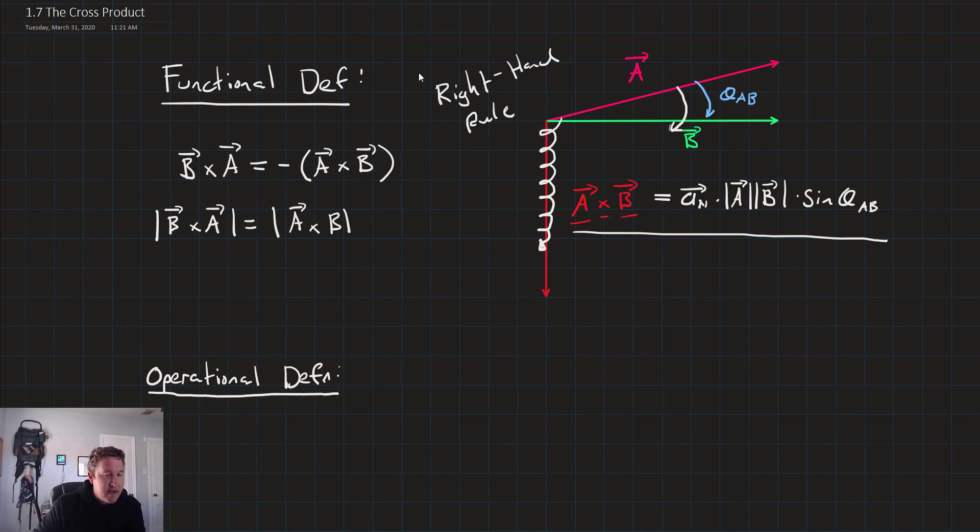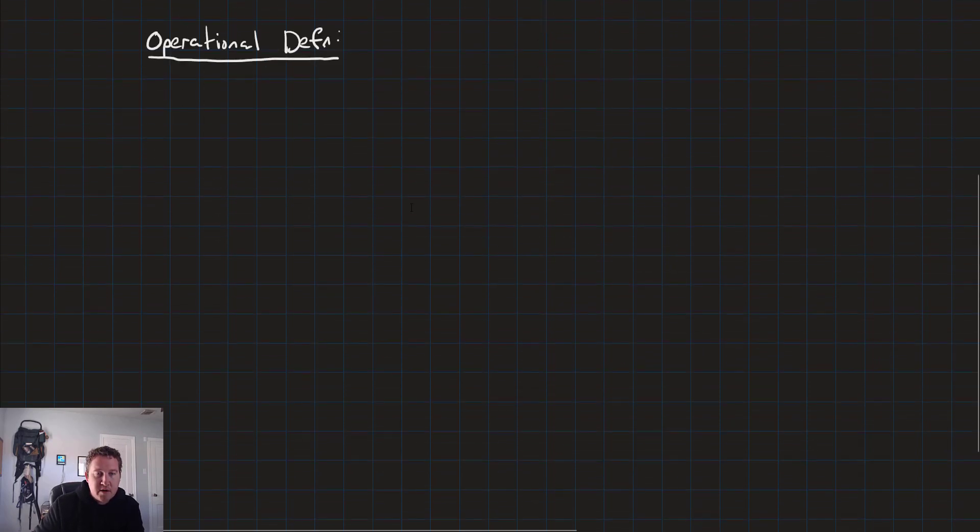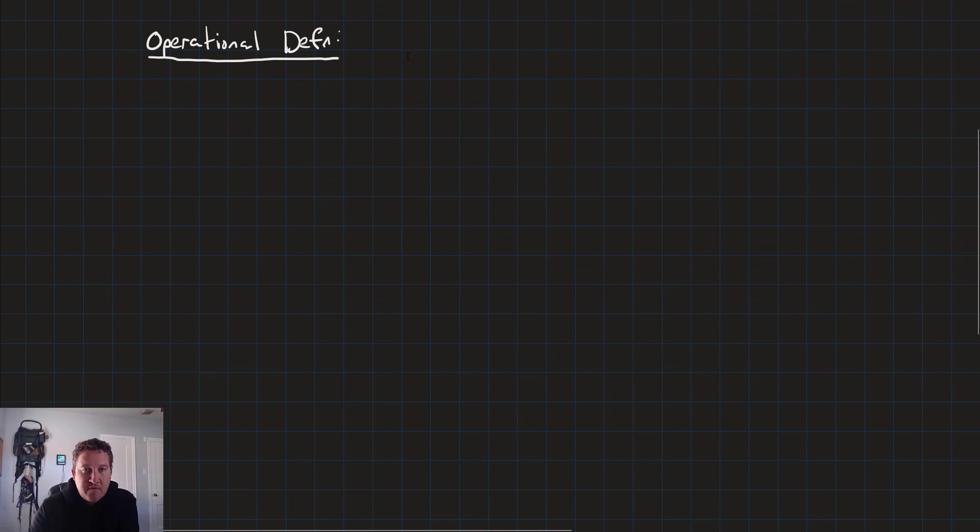Well how can we actually work it out by hand to figure out what the cross product is. The operational definition, how do we actually calculate the cross product? If we're given two vectors a and b then a cross b is equal to the determinant of a three by three matrix. That looks like this.